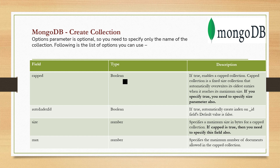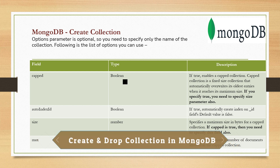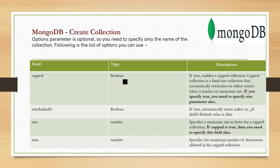Whenever you insert any document in MongoDB, it creates a field called _id, which is always unique. When you specify a capped collection, you must also specify the 'size' field. If you specify capped as true but do not specify size, MongoDB will immediately throw an error. Size is specified in bytes and represents the maximum size of the collection. The 'max' attribute specifies the maximum number of documents allowed in the capped collection.